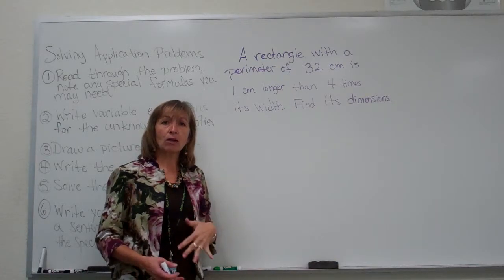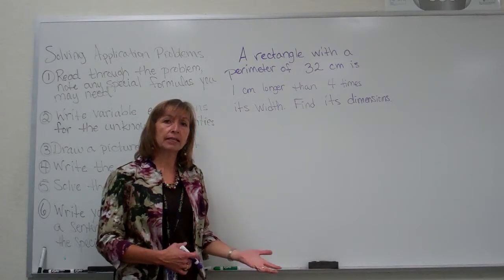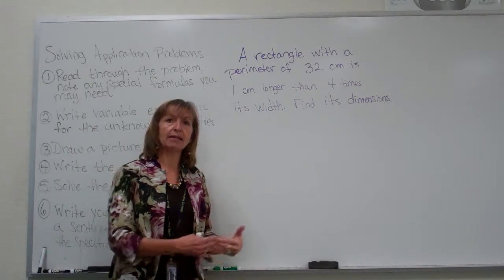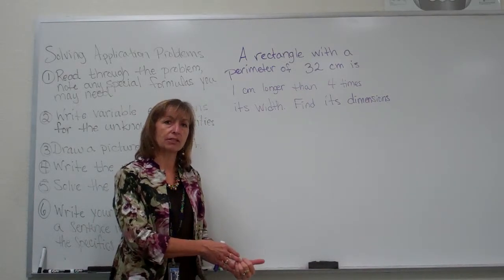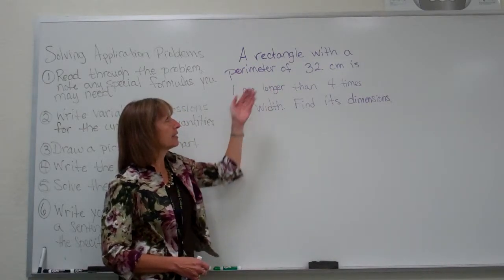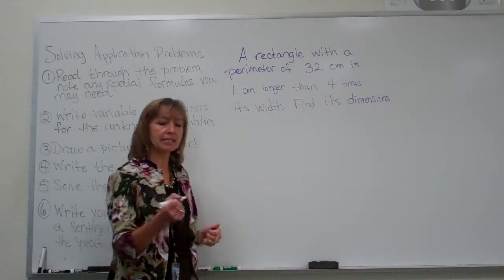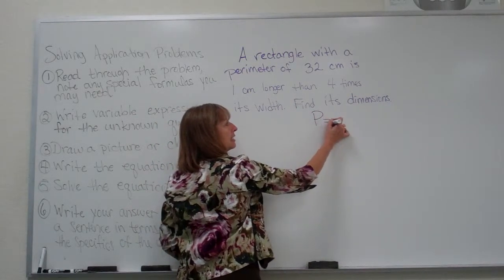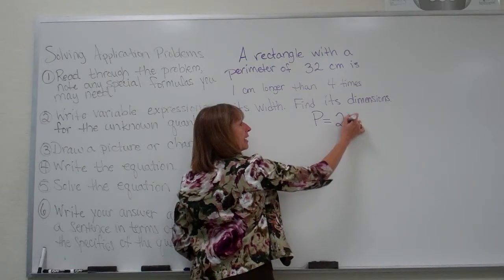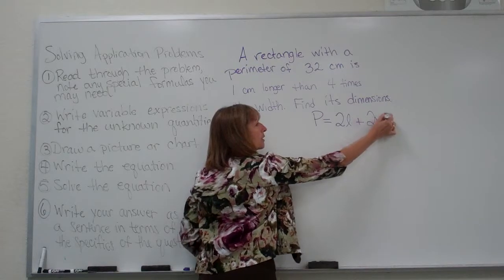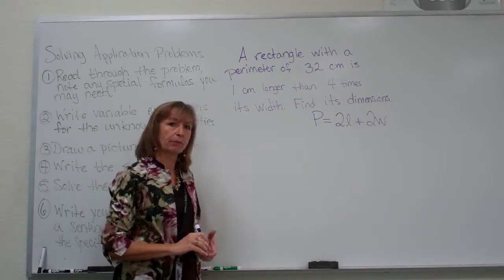Well, its dimensions are how wide it is by how long it is, and so I need to get the length and the width in order to get the answer of the dimensions that I'm supposed to give at the end. So I know it is an equation that has to deal with the special formula that perimeter of a rectangle is equal to two times the length plus two times the width. So I'll write that down now so I remember.